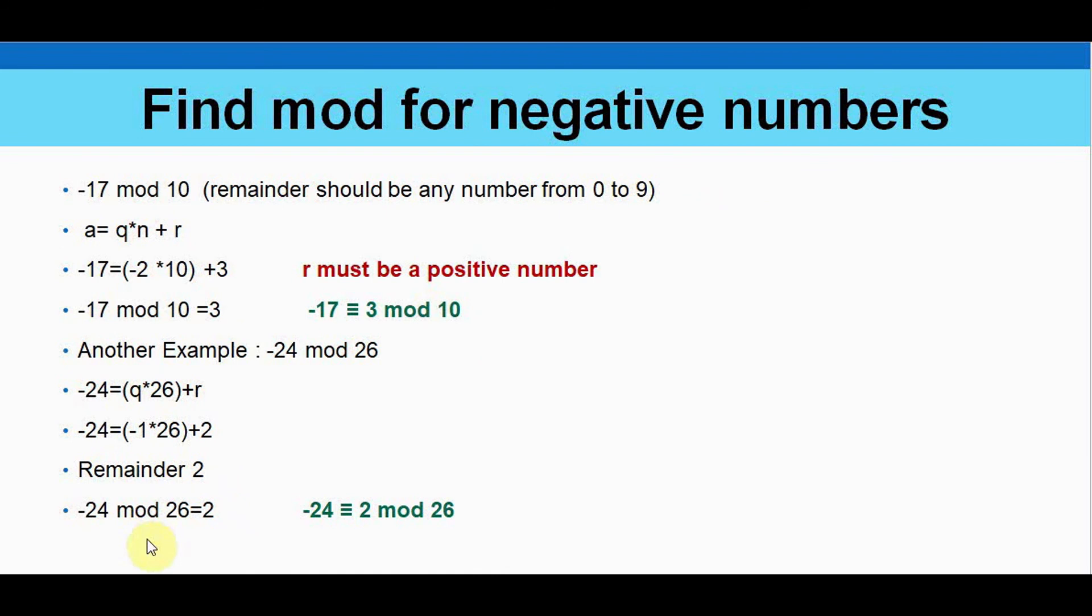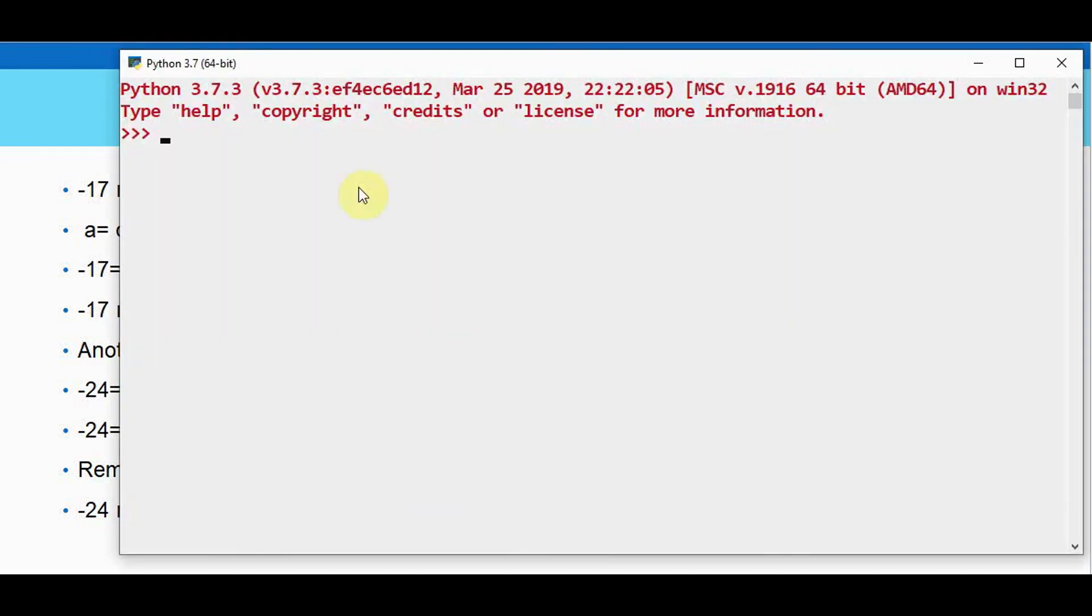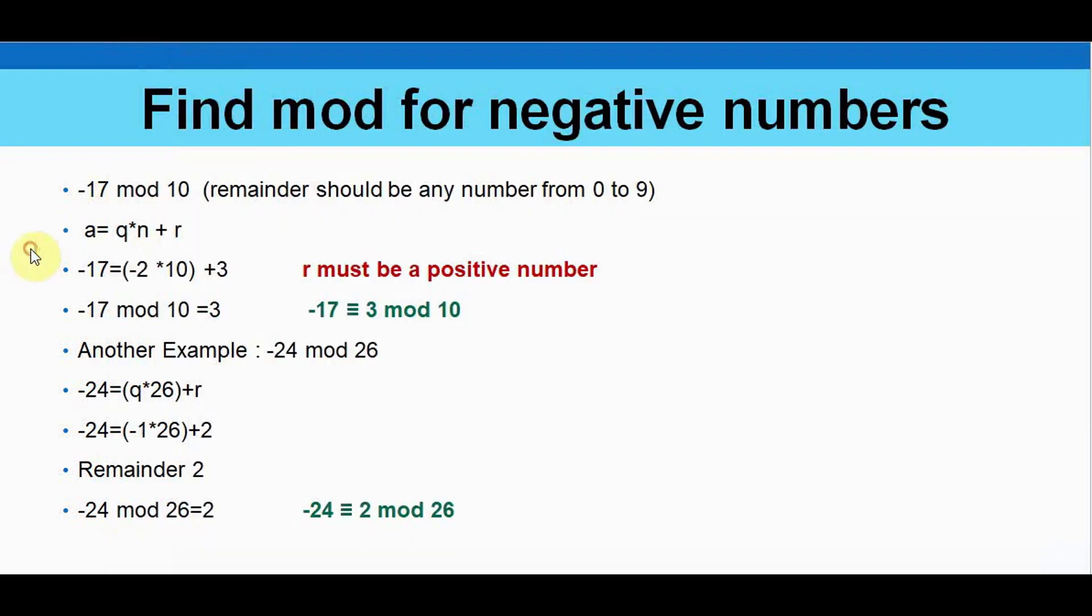That's it. This mod operator can be implemented in any programming language. You can make use of percentage symbol to apply this mod to get the remainder. So in Python I can just verify with these values minus 17 mod 10. So I just give minus 17. The mod operator is this on 10. We got 3 here.